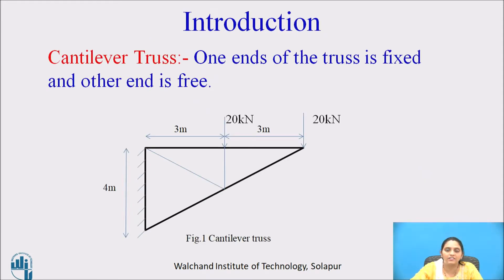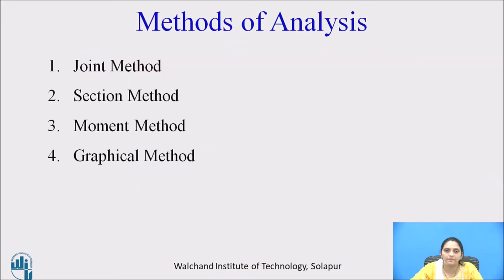A cantilever truss means one end of the truss is fixed and the other end is free, as shown in the diagram. We can analyze a truss by the joint method, section method, moment method, and the graphical method.